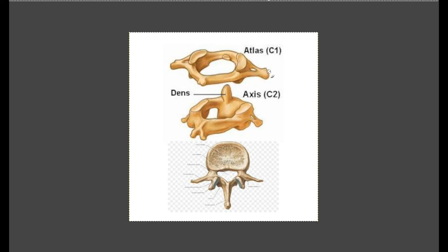C1 has no spinous process and the widest transverse processes. For C2, the fun feature is what's called the dens, or odontoid process — a thumb-like projection that points upward. The dens of C2 actually sticks up inside the vertebral foramen of C1 and articulates there with C1's articulating surface, creating the pivoting action of the joint.